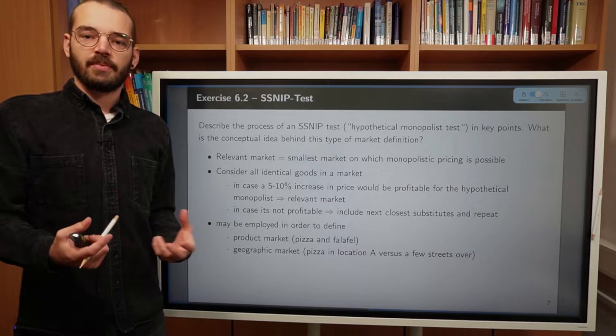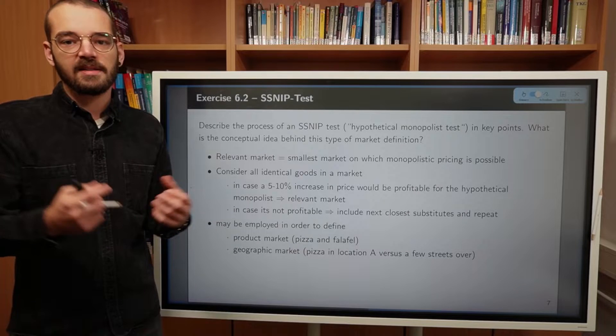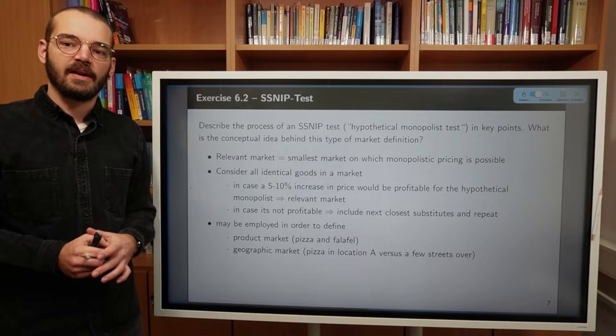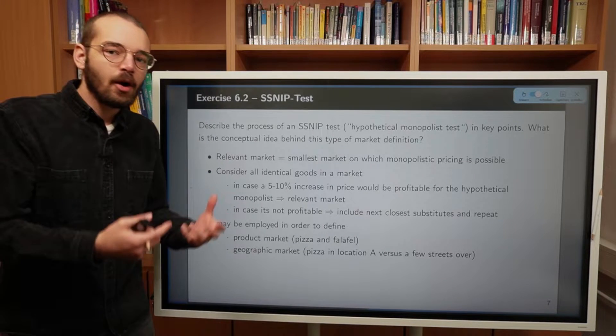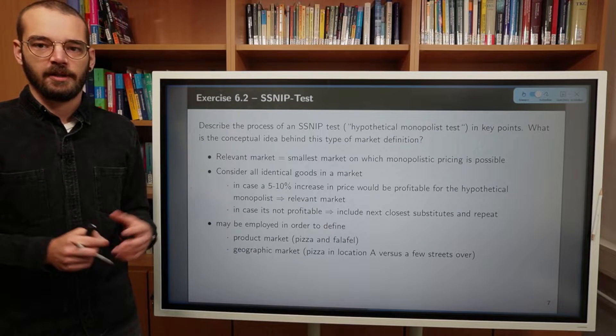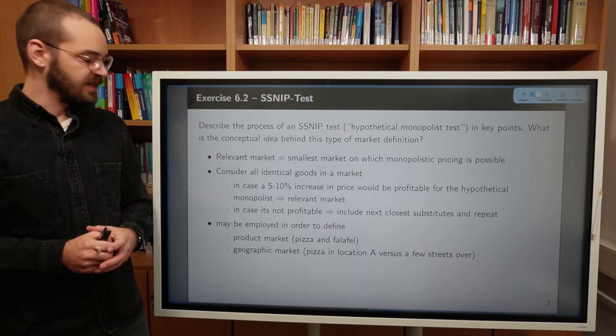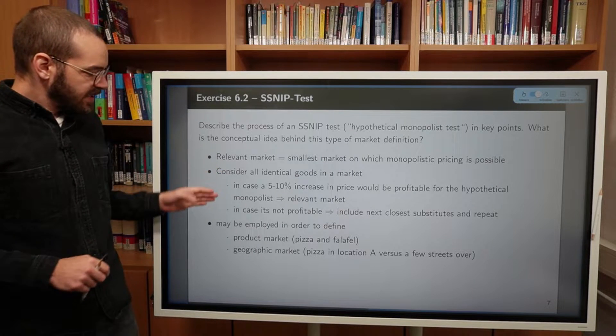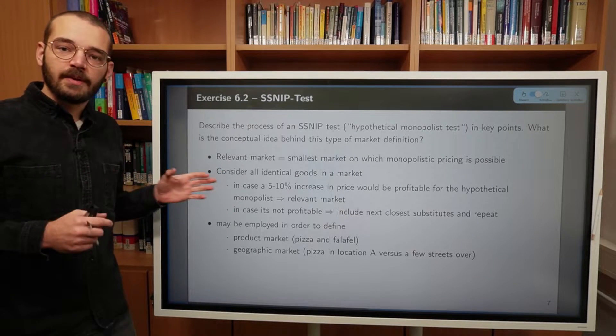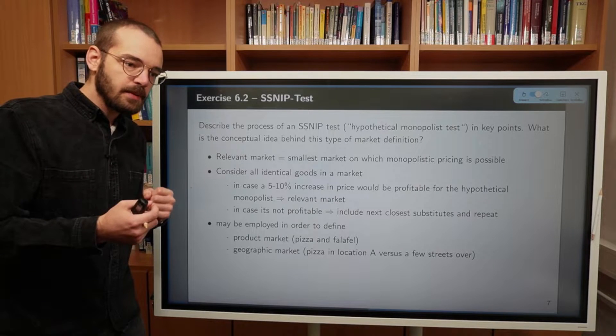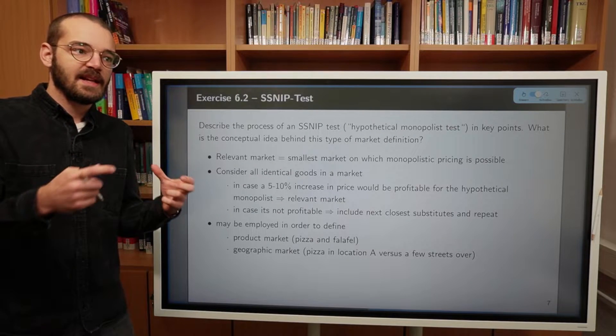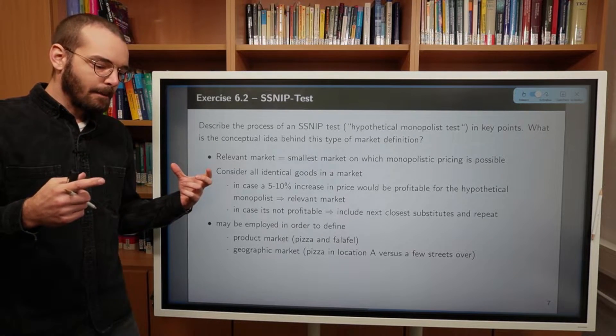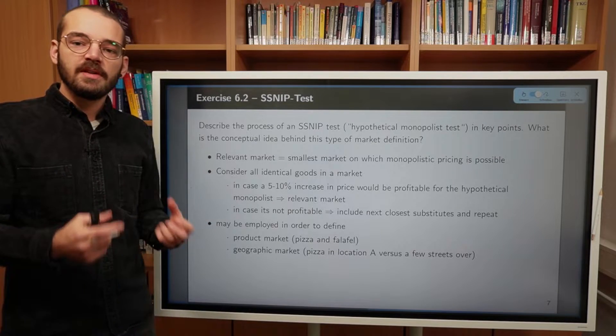So we will broaden our market, consider the next closest substitutes to the goods that we already considered to be in this market in the previous step and repeat this thought experiment. So again, ask yourself, now considering these additional products, would it now be profitable to choose monopolistic pricing? We can do this to find the relevant market. And the relevant market, again, in itself might carry two different meanings.